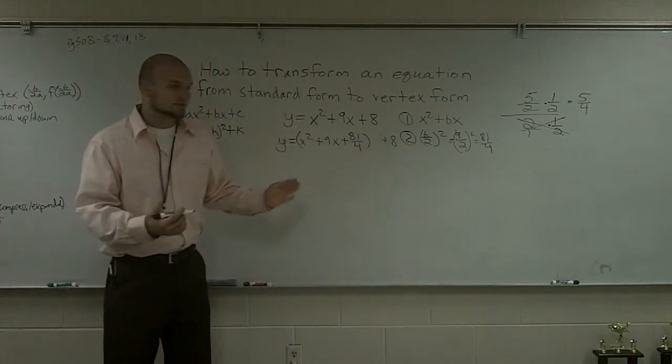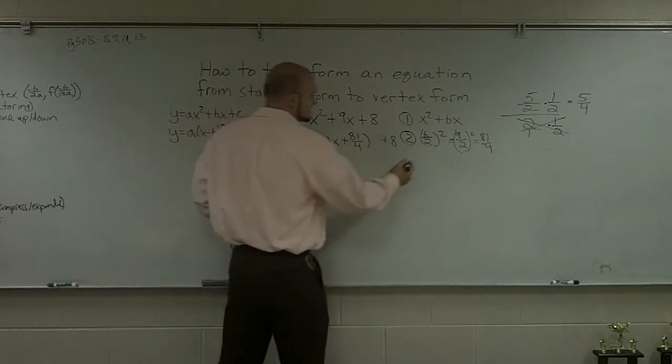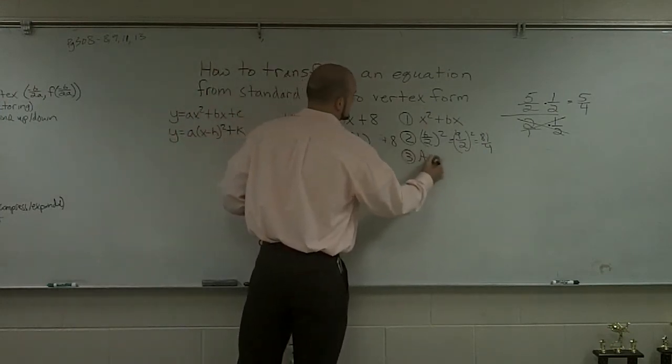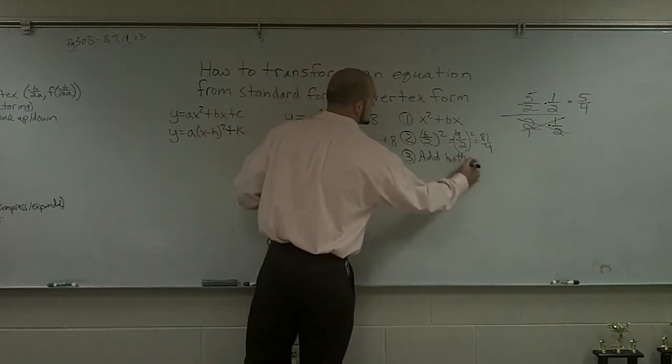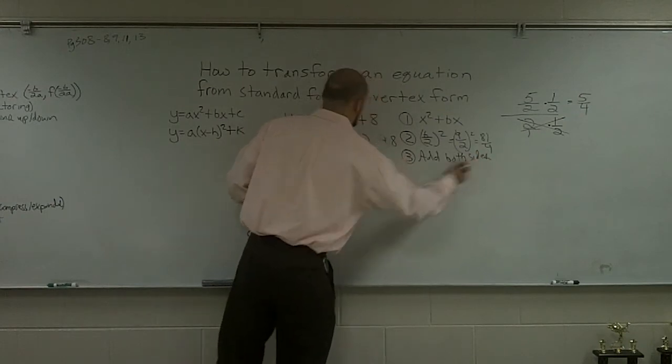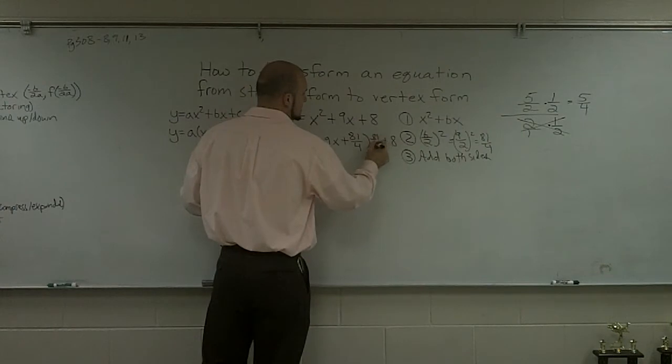Now, usually the next step I would like to say is add to both sides, or you can also just add and subtract on the same side. But when completing the square, I always like to add on both sides. But if I just add it to this side, I'm just going to subtract it over anyway. So I'm going to subtract 81 over 4.